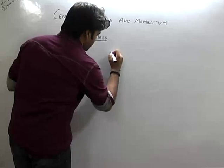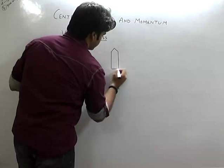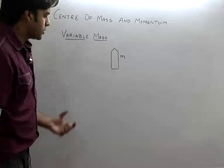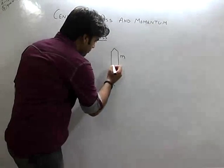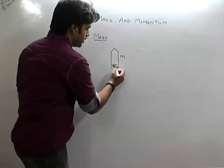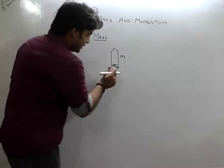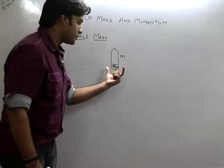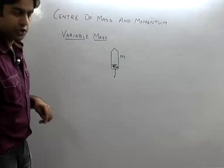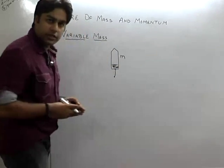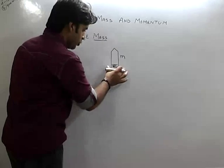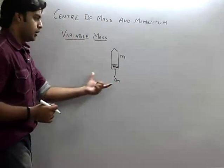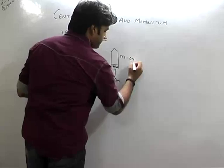Let us suppose the rocket's initial mass is M. In this chamber, burning occurs and gases come out through a small hole. Let us suppose the gas mass that exits is delta M. So the rocket's remaining mass is M minus delta M.